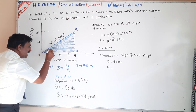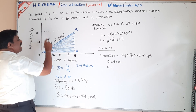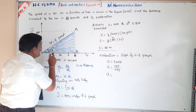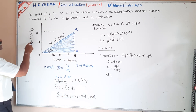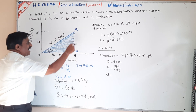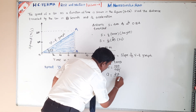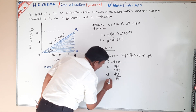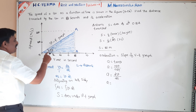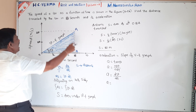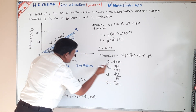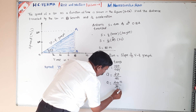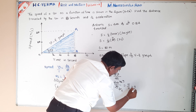Tan theta means opposite side by adjacent side. Here this angle is taken as theta. The opposite side (y-axis) is dv, which is 20, and the adjacent side (time axis) is dt, which is 8. So A equals dv by dt equals 20 by 8, which is nothing but 5 by 2, equals 2.5 metres per second squared.